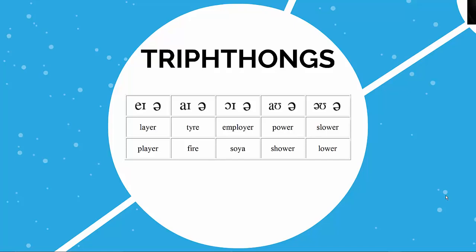So here we have five triphthongs. These are all the triphthongs in English, and they are formed by adding a diphthong plus ə. So the first one is eɪə, the second is aɪə, the third is ɔɪə, the fourth is aʊə, and the fifth is əʊə. Here you also have examples for each triphthong.